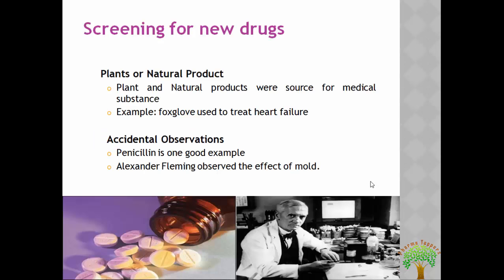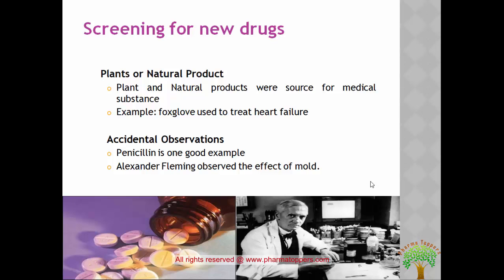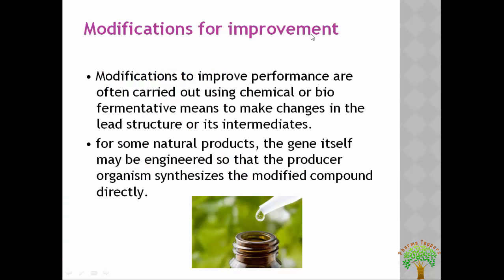Coming to the history of drug development — what is the necessity for screening new drugs even if many drugs are already available in the market? The major sources for screening of drugs are plant sources and accidental observations. Various plant sources of natural products are responsible for medicinal activity; for example, foxglove for the treatment of heart failure. Accidental observations include the identification of penicillin by Fleming from the effect of mold. There are also many modifications done for improving existing drugs which can enhance their activity, and modified compounds can be engineered directly by modification of genes.